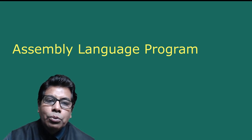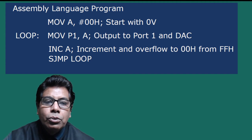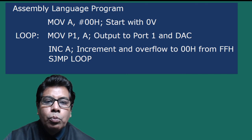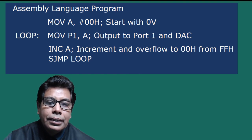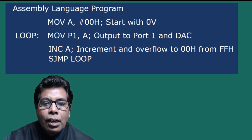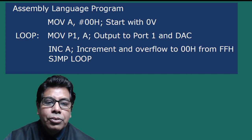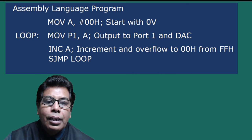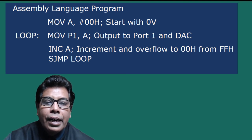Now let us go to the assembly language program. The first step is start with 0 volts, so we use the instruction MOV A, #00H. Then the next step is output to port 1 and DAC, so we move the data from A to P1: MOV P1, A. Then increment and overflow to 00H from FFH — it will increment till FFH and then overflow back to 00H, so we give the instruction INC A. Then the last instruction is SJMP to jump back to the loop label. After every increment, the output to port 1 is given to the DAC, generating the waveform. It goes up to maximum voltage then directly drops to 0, giving us the sawtooth waveform.